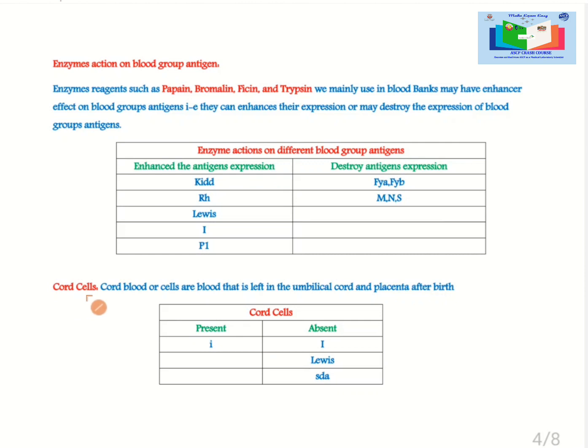Cord cells. Cord blood cells are blood that is left in the umbilical cord and placenta after birth. Some antigens are present on specific cells such as cord blood cells. Blood group I antigen small i is present on cord blood cells while big I is absent on cord blood cells. Other blood group antigens such as Lewis and SDA are also absent on cord cells.